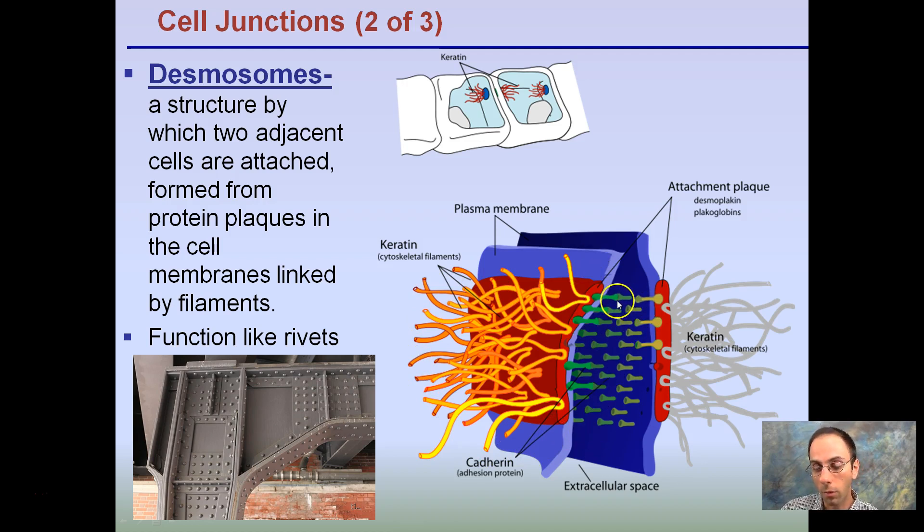Our desmosomes have these rivet-like structures or structures homologous to the rivets that hold up the bridge to be able to adhere one cell to another cell.